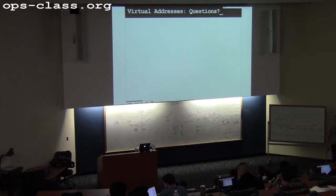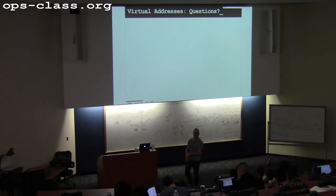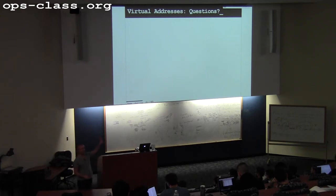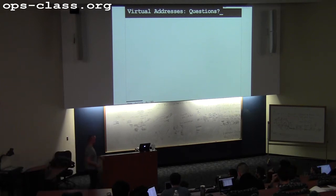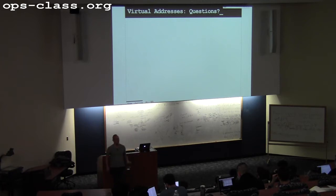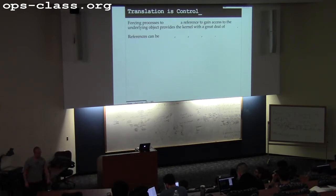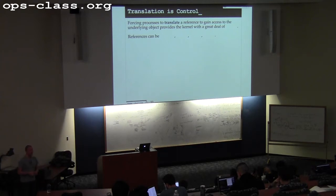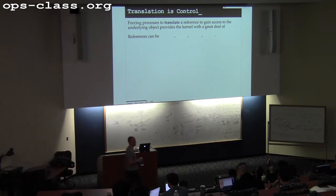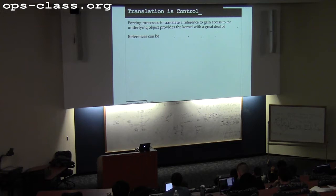Any questions about virtual addresses? A couple of times ago we talked about the address space abstraction — give each process a big uniform view of memory. We pointed out that clearly that abstraction requires breaking the connection between physical memory and the view of memory the processes have, and we introduced the idea of a virtual address. So what I'm doing here is I've created a new level of indirection. I'm forcing processes to translate a reference to memory to gain access to it. What are some of the things that allows the kernel to do — what new powers do I get by forcing processes to translate a virtual address into a physical memory address?